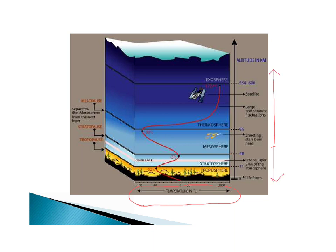In the troposphere at the surface, this is where you find life forms. In the stratosphere, the ozone layer is located and 24% of the atmosphere occurs between the ozone layer and the surface of the earth. The mesosphere is where shooting stars burn up and large temperature fluctuations occur. Satellites float around in the upper thermosphere, and once you get to the exosphere, anything above is outer space — though air molecules are still present, they're so far apart they're not considered an atmospheric layer. We'll get into what's important for the APES exam for each layer.